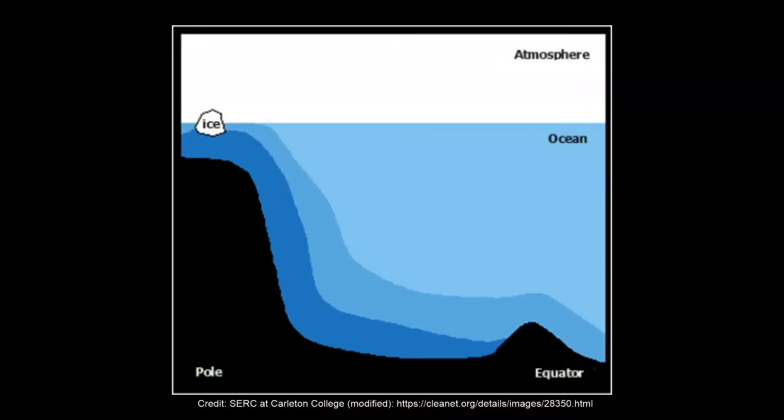Water in the oceans moves in patterns that we call currents. Winds drive ocean currents in the upper 100 meters of the ocean's surface. However, ocean currents also flow thousands of meters below the surface.